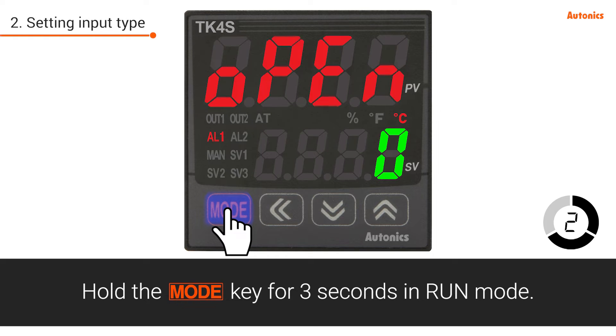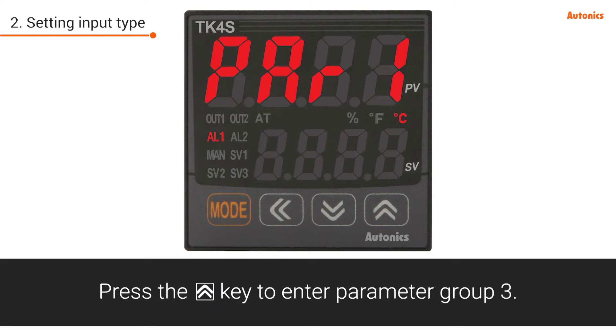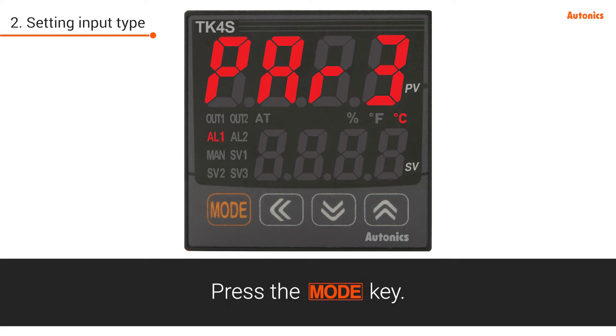Hold the mode key for 3 seconds in run mode. Press the up key to enter parameter group 3. Press the mode key.